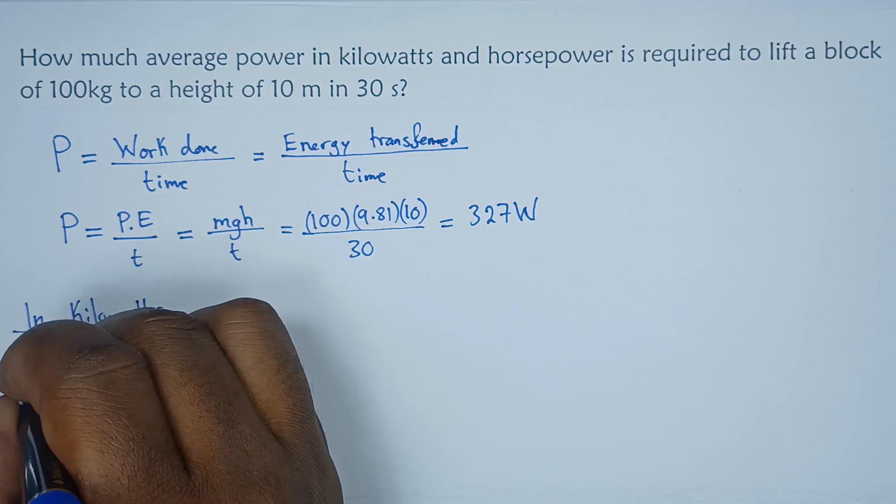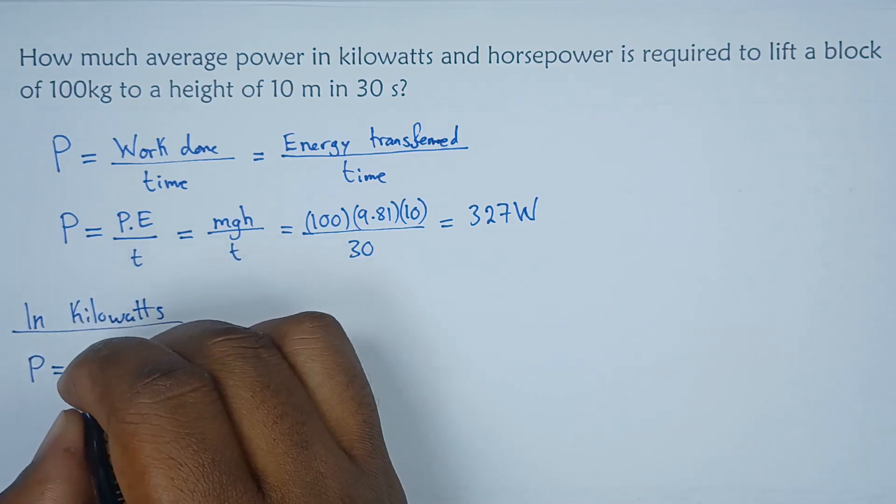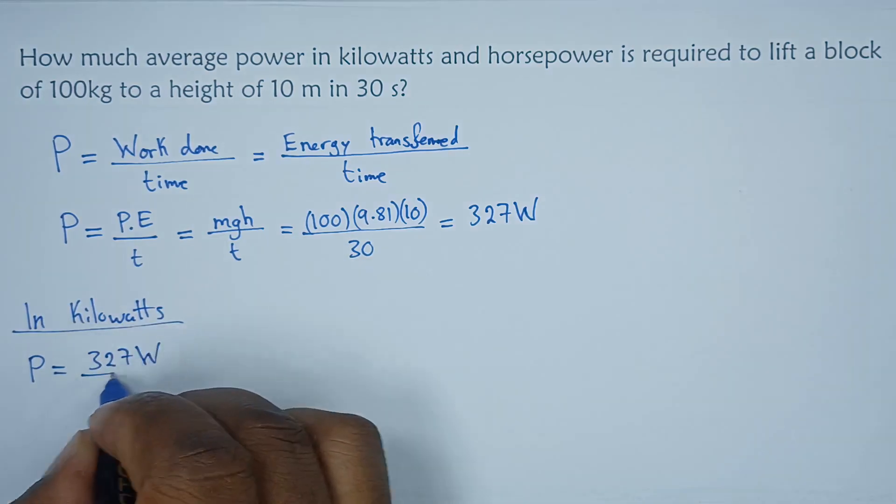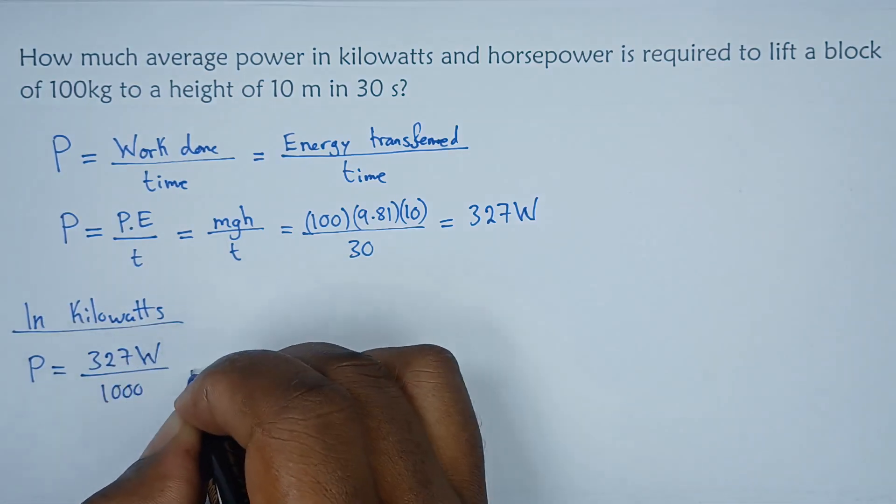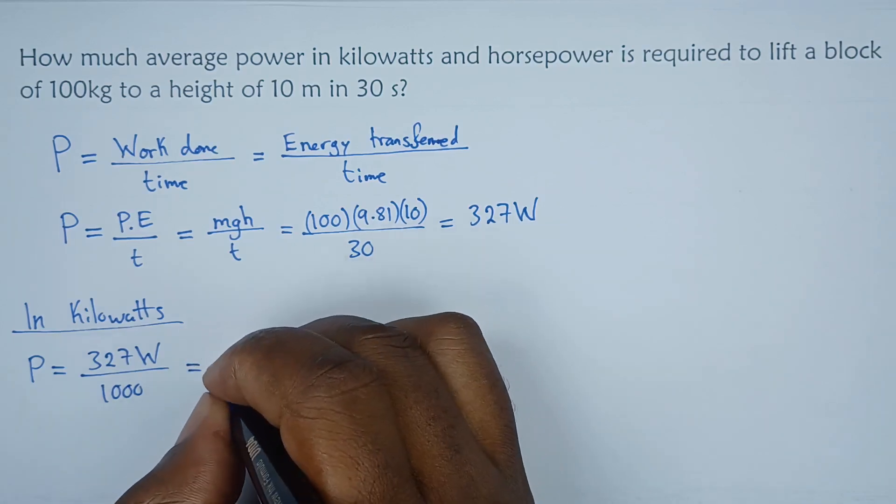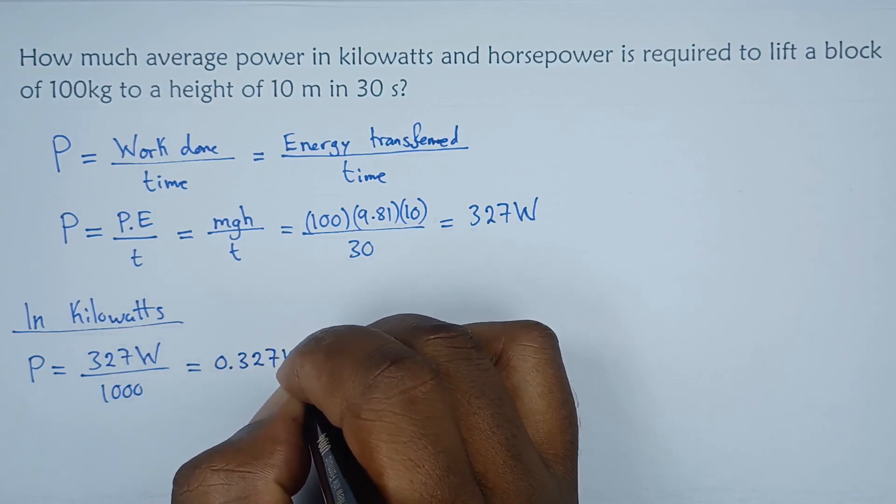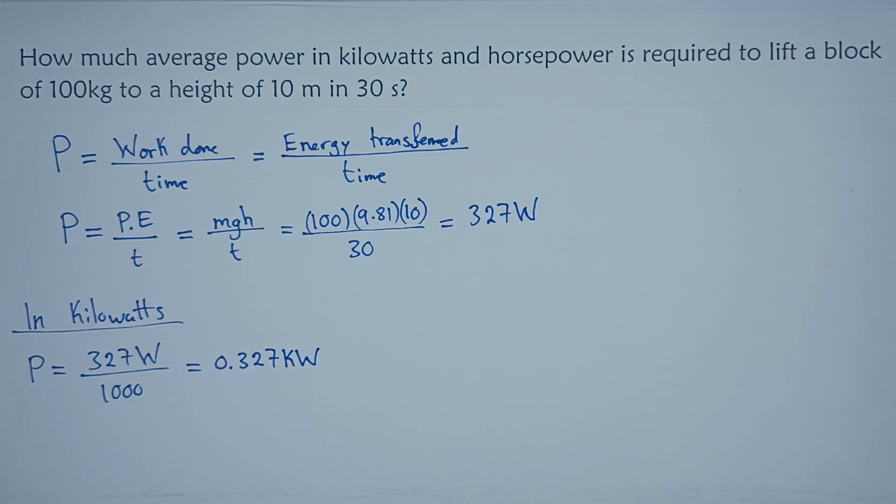So in kilowatts we can simply say the power which is 327 watts and just divide this value by a thousand. So what we get is simply 0.327 kilowatts. Okay, just like that. So that's our answer in kilowatts.